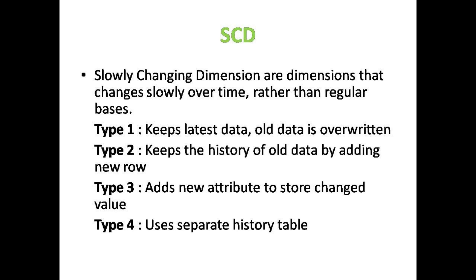Rather than on a regular basis, it changes data over time slowly. There are four important types: Type 1, Type 2, Type 3, and Type 4. Type 1 keeps the latest data, overwriting old data. Type 2 keeps the history of old data by adding new rows. Type 3 adds new attributes to store changed values. Type 4 uses a separate historical data table. I will explain each in depth.